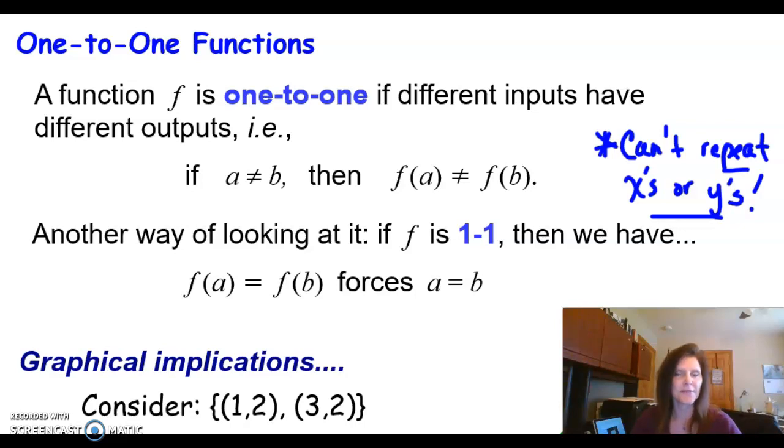We know how to identify functions, but how do I identify something called a one-to-one function? A one-to-one function means that every single input gets a specific output. There is no repeat of what I put in and what I get out. Everybody just gets paired up one time and that's it.